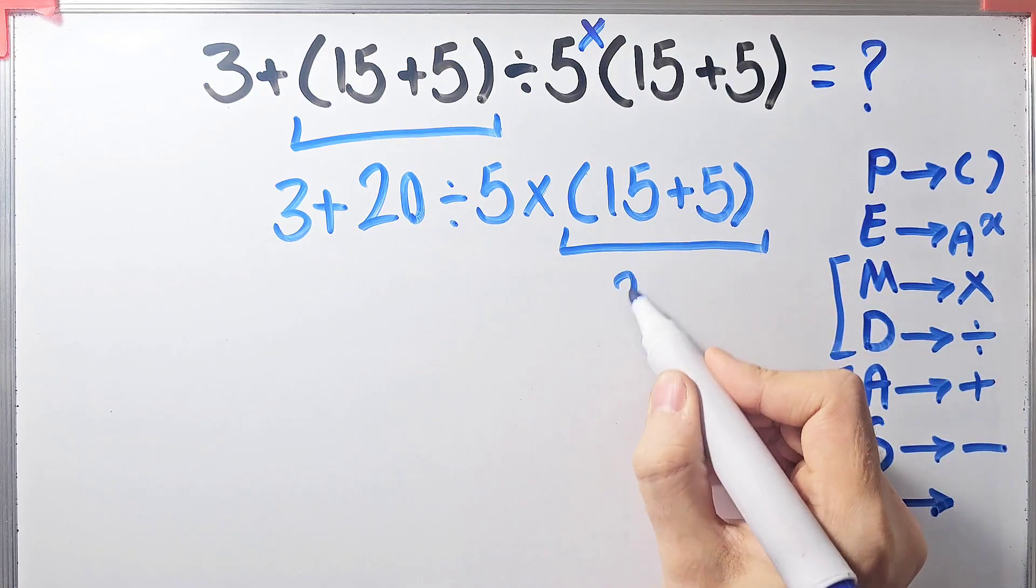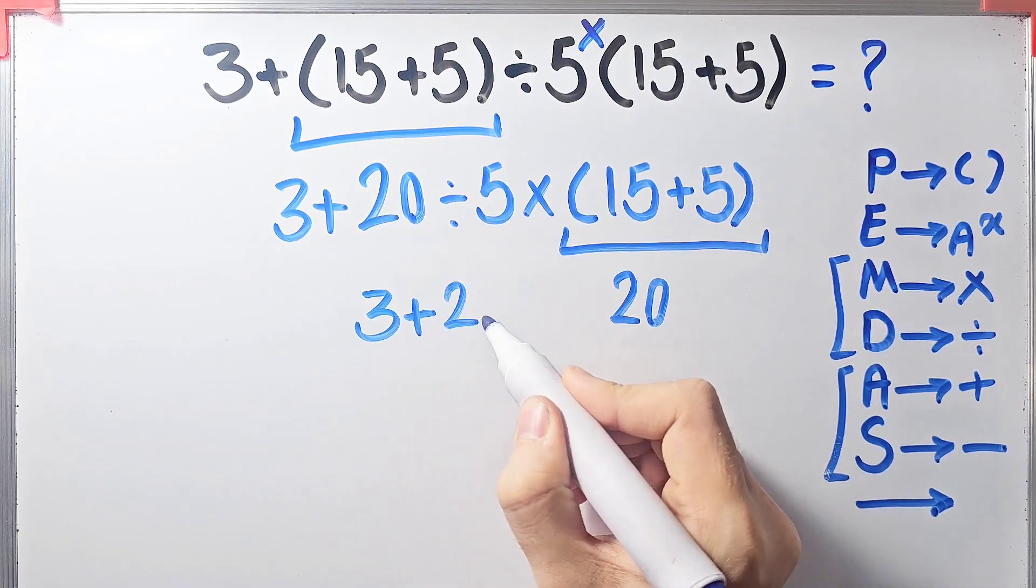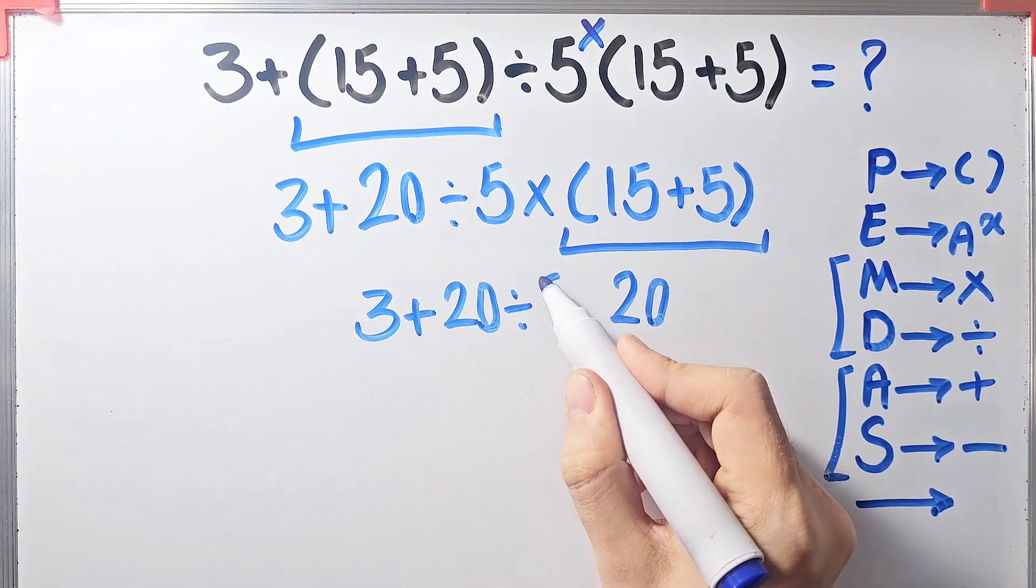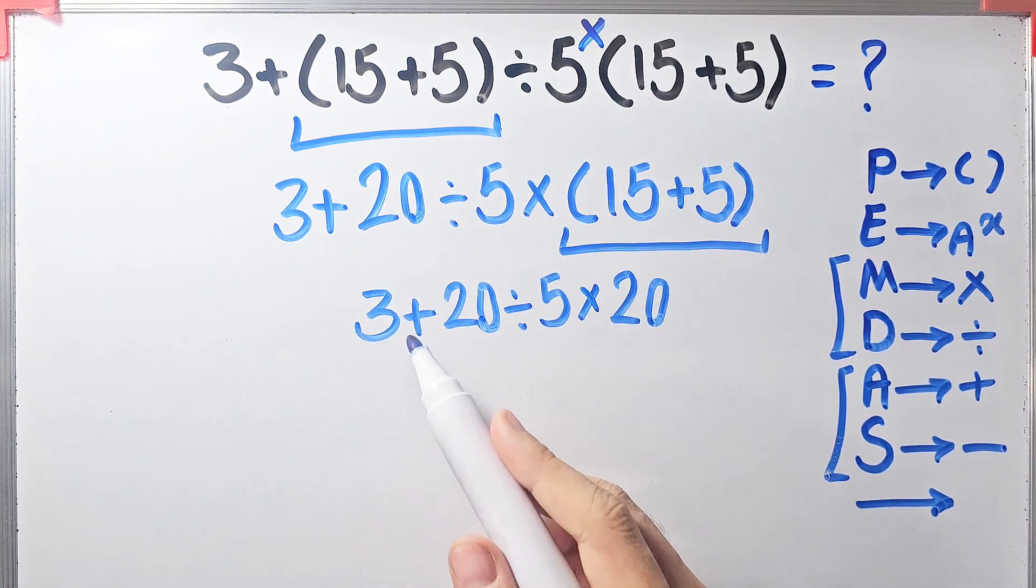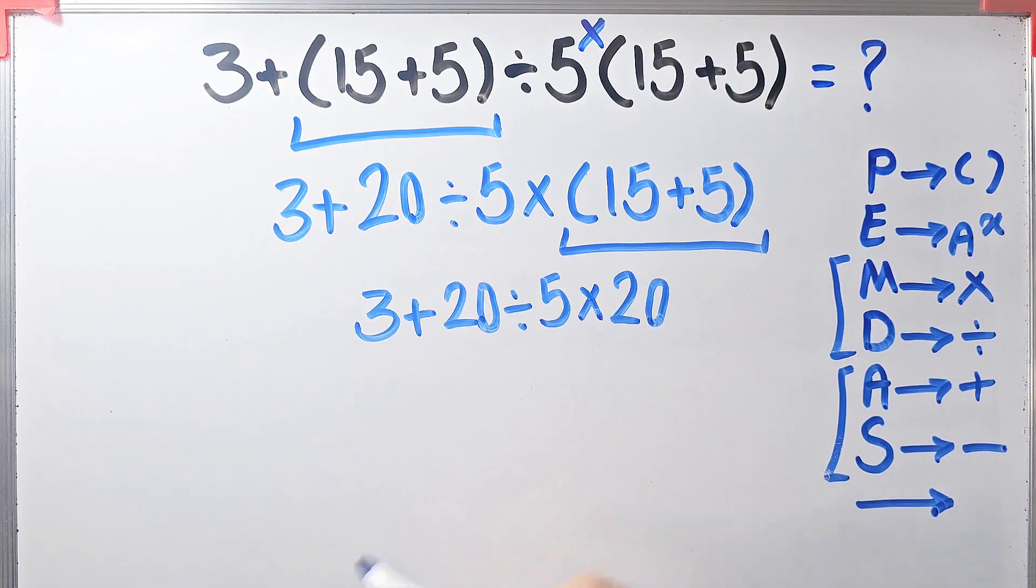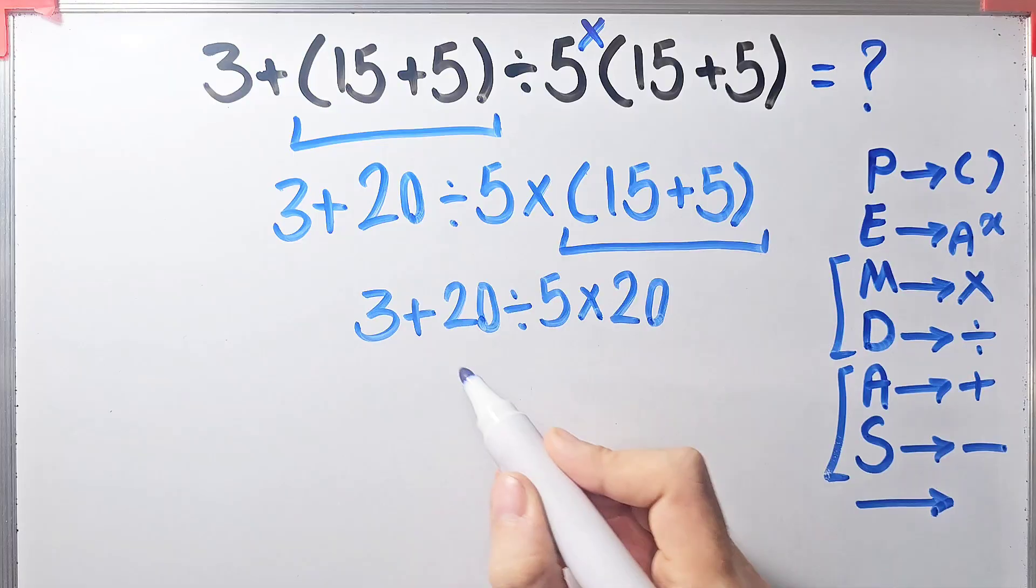Now the question is 3 plus 20 divided by 5, times 20. In this step we have addition, division, and multiplication. First we simplify this division: 20 divided by 5 equals 4.